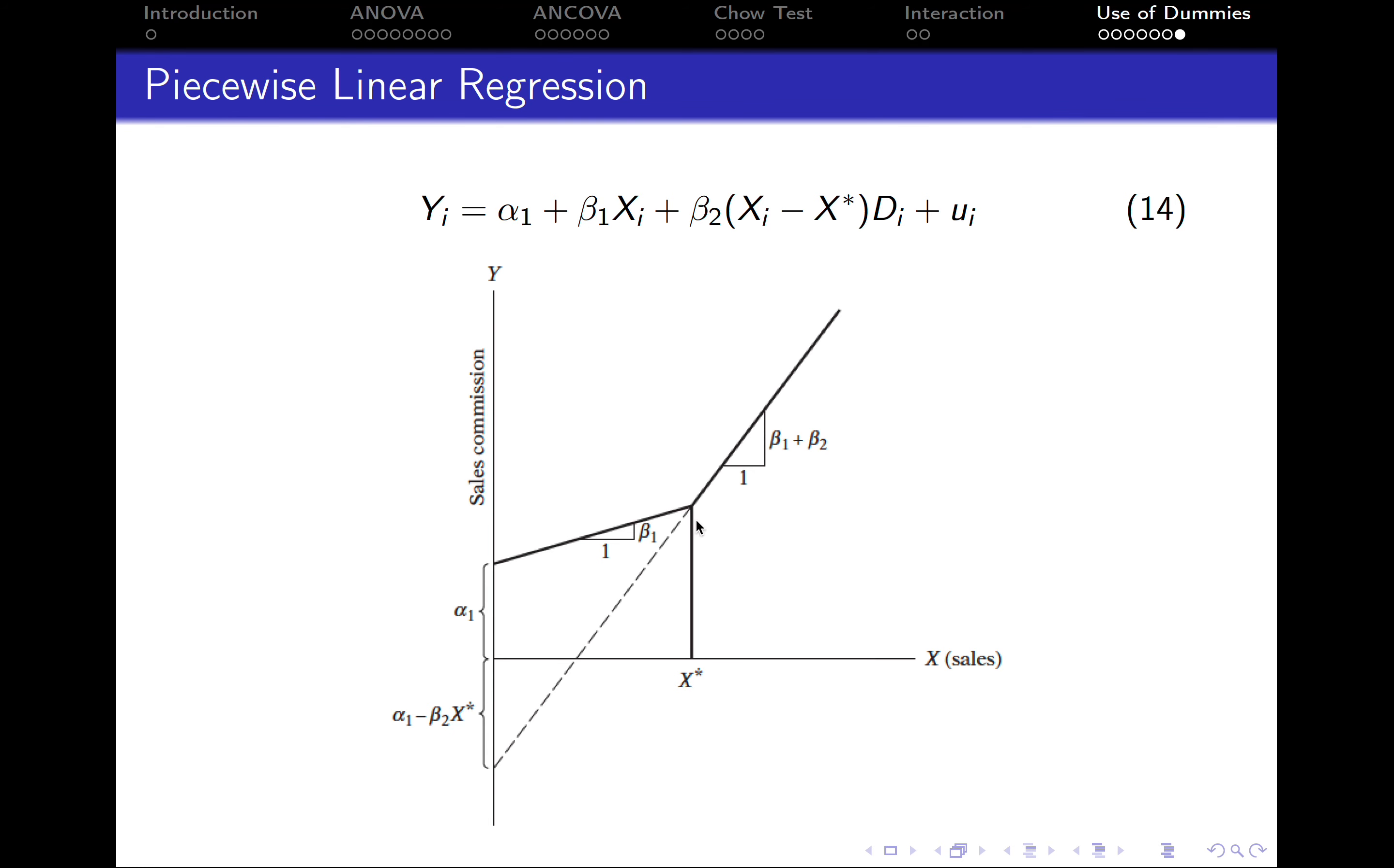After the target level is reached, the dummy variable becomes 1 and the new slope is beta 1 plus beta 2. As you can see, it's steeper. The more sales the representative generates, the higher their sales commission.